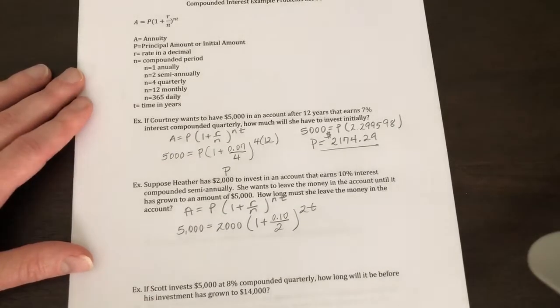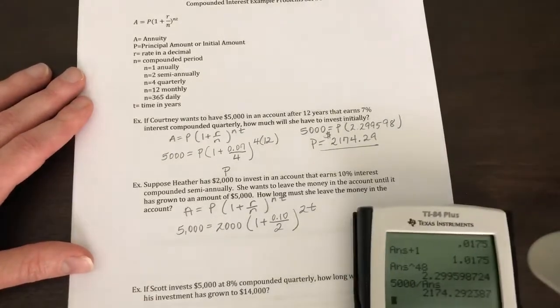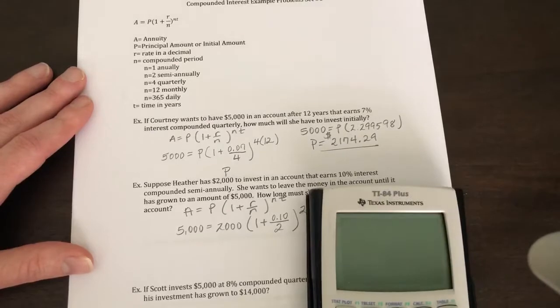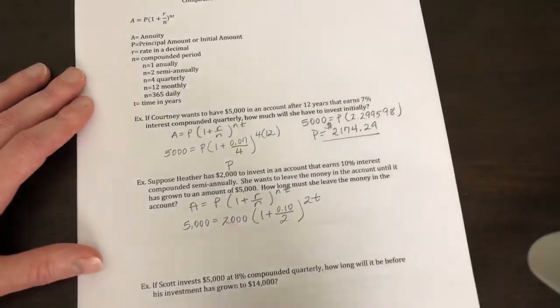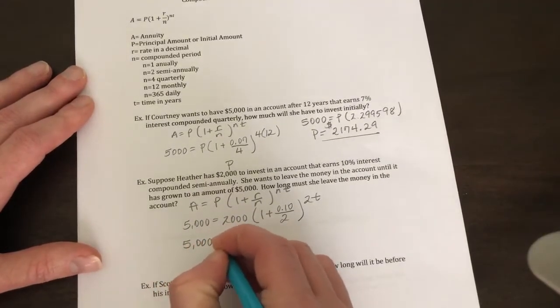Okay, so that's what our equation looks like. Now this is going to work just like a regular exponential equation. So what I'm going to do is 0.10 divided by 2 and add 1, so I get 1.05. So this is the equation I'm trying to solve.